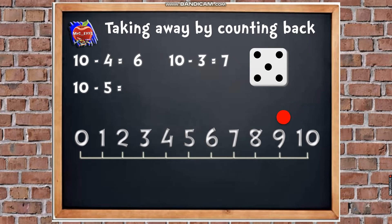Here we go. I'm going to have a go. Let's see if we got the same answer. So I'm going to count back 5. I'm going to go 1, 2, 3, 4, 5. And I've landed on 5. Did you land on 5? Excellent. So it's 10, take away 5, equals 5. Well done.